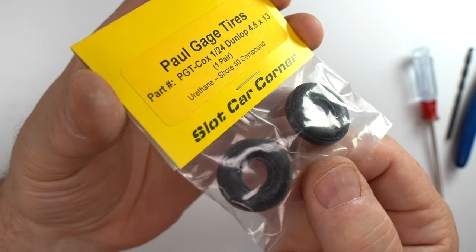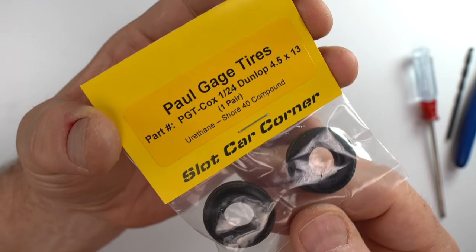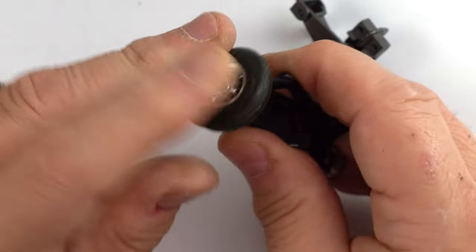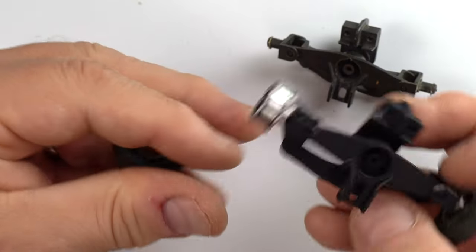Here's a look at the Paul Gage tire's packaging. His tires are one-sided, so you'll have detail on one side. On the other, no. But they look great for most applications.